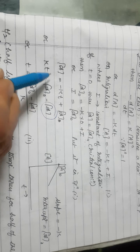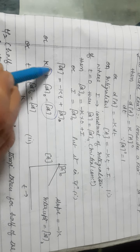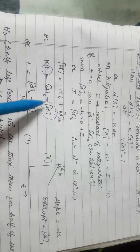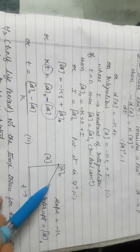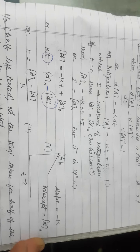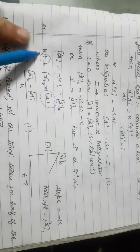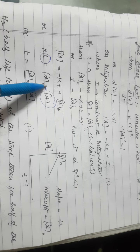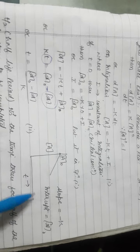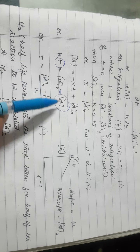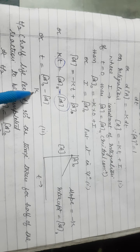Now we derive the half-life T½. T½ is the half-life period — the time taken for half of the reaction to be completed. At T½, the remaining concentration A = A₀/2. Substituting: T½ = A₀/(2K). So T½ is directly proportional to the initial concentration in a zero order reaction.